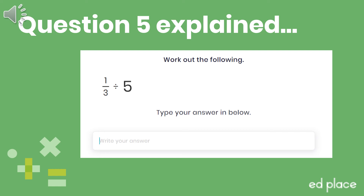Now let's look at a different question: one-third divided by five. K — keep one-third the same; F — flip five ones to make it one-fifth; C — change divide to multiply. One-third times one-fifth equals one-fifteenth. We can't simplify that, so one-fifteenth is the answer.